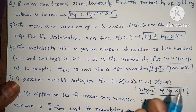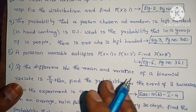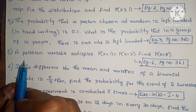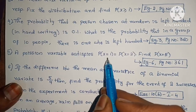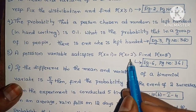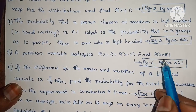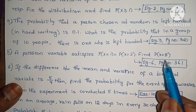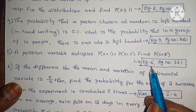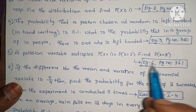This is very important. A Poisson variable satisfies P(x=1) equals P(x=2). Find P(x=5). Example 6, page number 361.